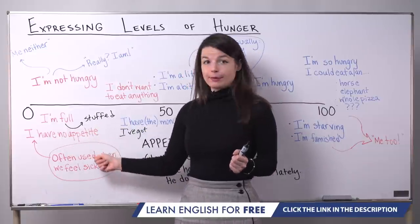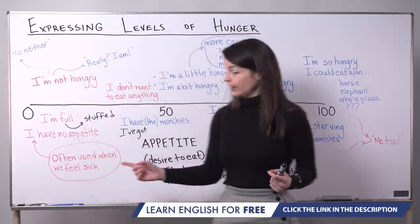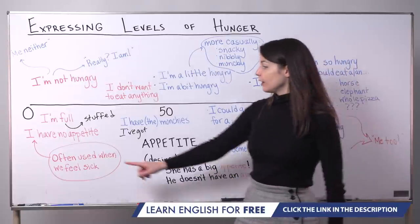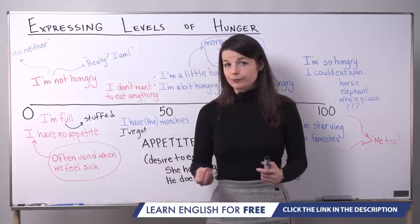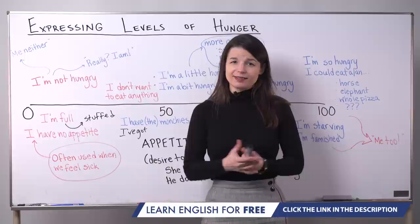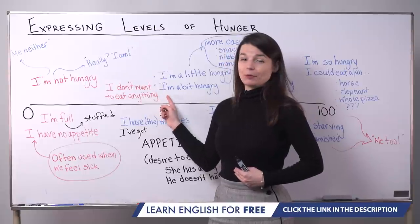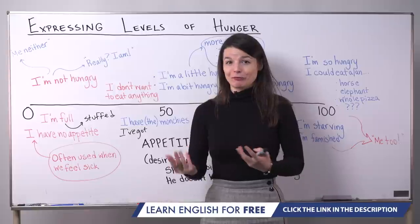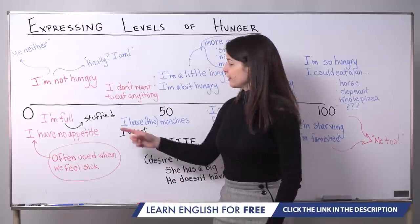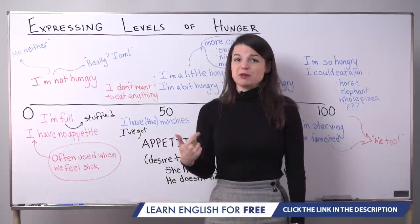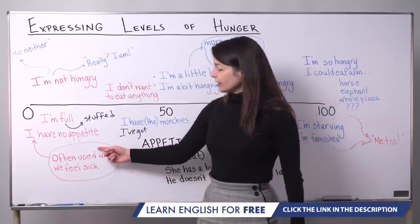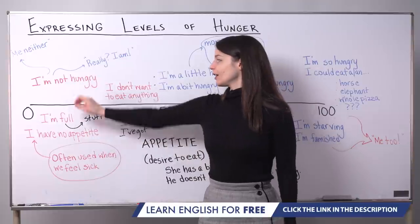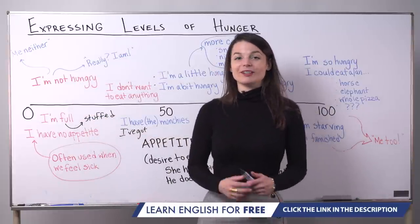Finally, 'I have no appetite' means I have no desire to eat. We often use this expression when we feel sick — if we have a stomach ache and don't want to eat anything, we say 'I have no appetite.' You could elaborate and say 'I don't feel well today; I have no appetite.' This is most useful when actually sick, whereas for simply not being hungry, 'I'm not hungry' is the quickest and simplest way to communicate that idea.